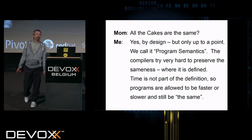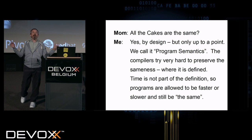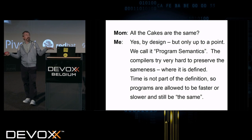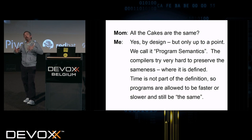Yes, by design, but only up to a point. We call it program semantics. The compilers try very hard to preserve the sameness where it is defined. Time is not part of the definition. So programs are allowed to be faster or slower and still be the same. And here I'm going to vary from my slides a little bit. This represents, in my opinion, one of the greatest weaknesses of the current crop of programming languages on the planet. They don't refer to time directly. So faster or slower actually makes a difference. Because from the moment we're born to the moment we die, we have a finite amount of time on the planet. It's the most scarce resource imaginable. So time is actually the most important thing. The act of dropping time from programming languages was done to make the language mathematics simple and able to let us do the things we do with compilers right now, but it misses out on a fundamental truth of the universe. So I think there will come a time when we will put time back into the programming languages.